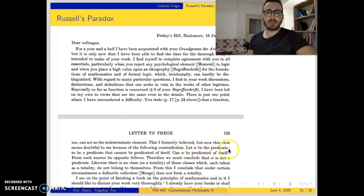Let W be the predicate to be a predicate that cannot be predicated of itself. W is the predicate that cannot be predicated of itself.